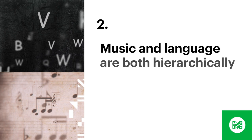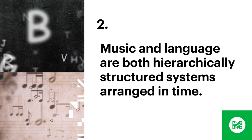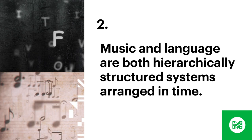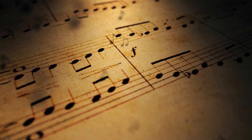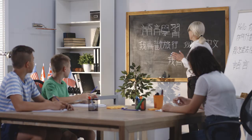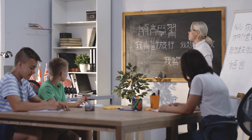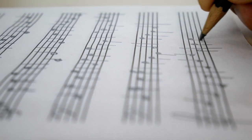Number two: music and language are both hierarchically structured systems arranged in time. Just as language is not a haphazard combination of sounds and words, music is not a random assortment of notes and chords. There are rules and principles that determine how the elements of both music and language can be combined and arranged. These sets of rules are known as grammar in language and harmonic structure in music. And when the rules are broken, a little light bulb goes off in our brains.